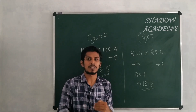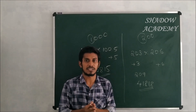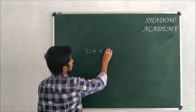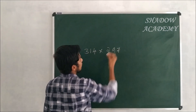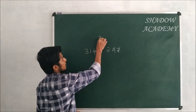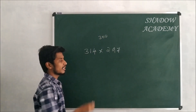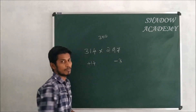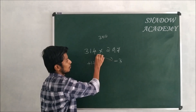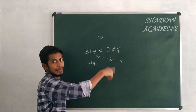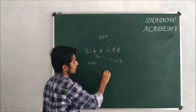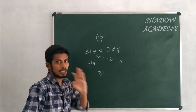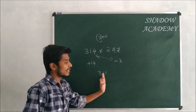Let's take a new number: 314 × 297. Same procedure. Base is 300. 314 has +14, and 297 has minus 3. Cross-add: 314 + (minus 3) = 311. We multiply 311 by 3 to get 933.